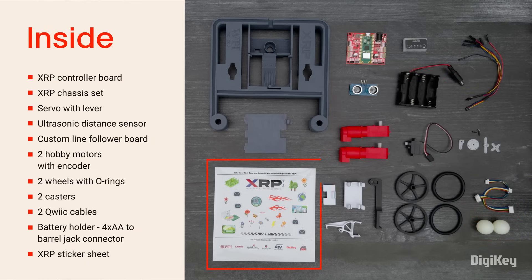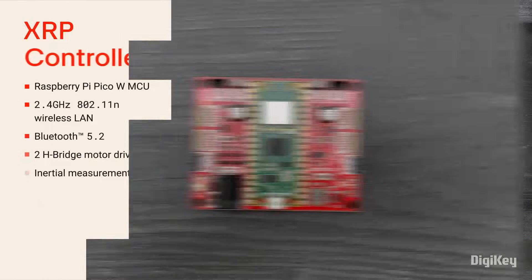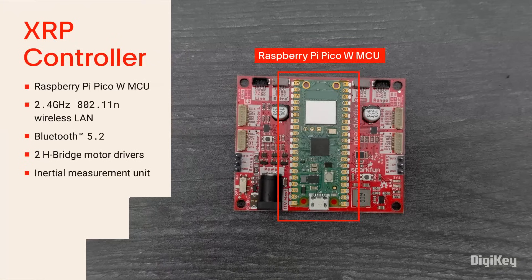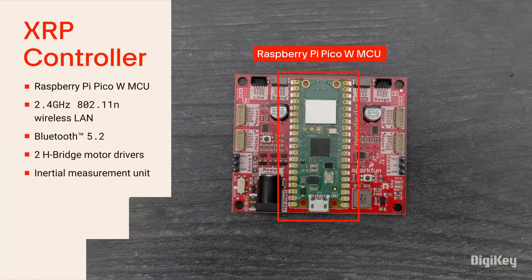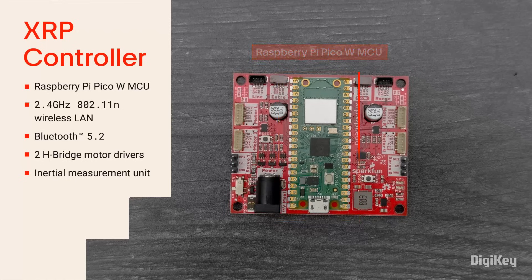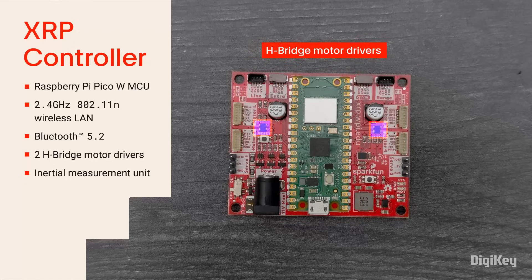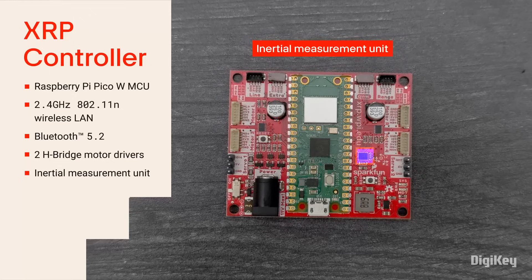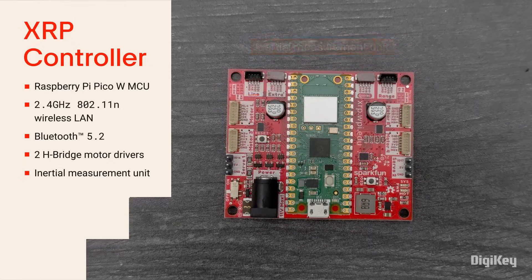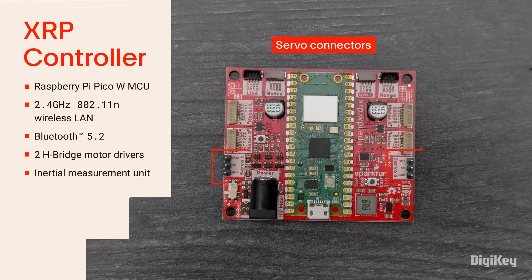A battery holder and an XRP sticker sheet. The XRP controller board has a Raspberry Pi Pico W MCU with wireless communication capability, a pair of dual H-bridge motor drivers, an accelerometer and gyroscope IC, four motor connectors and two servo connectors.